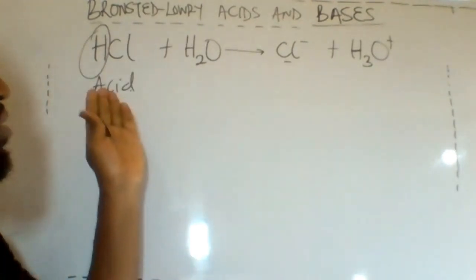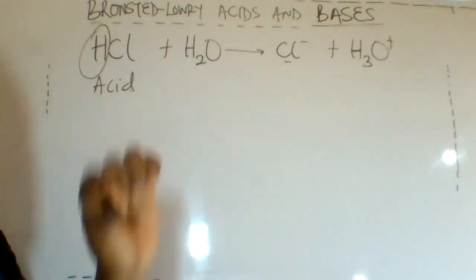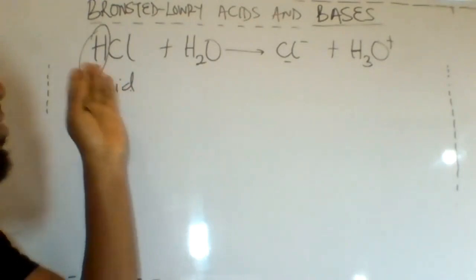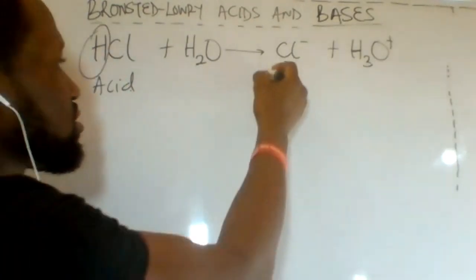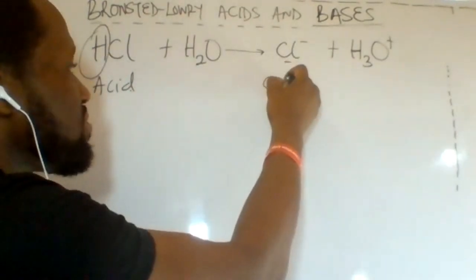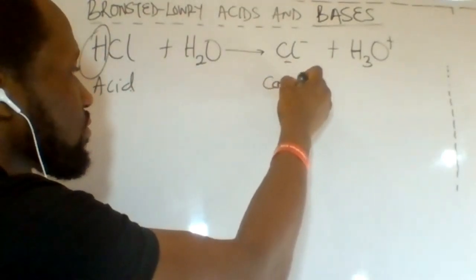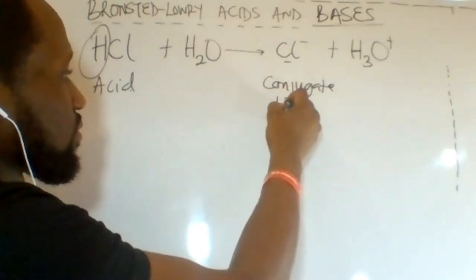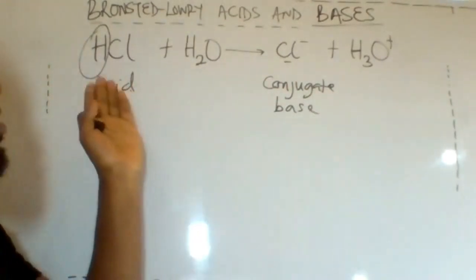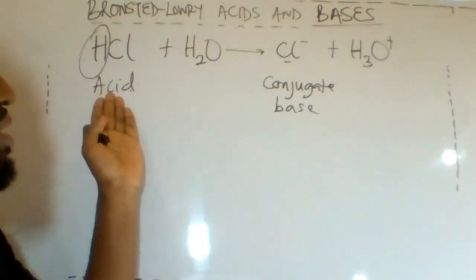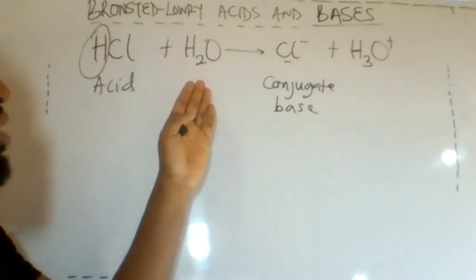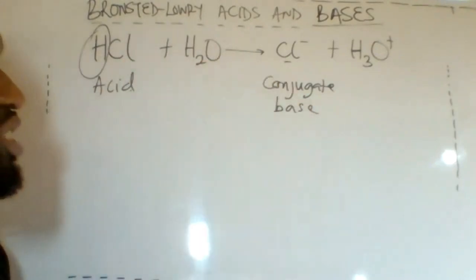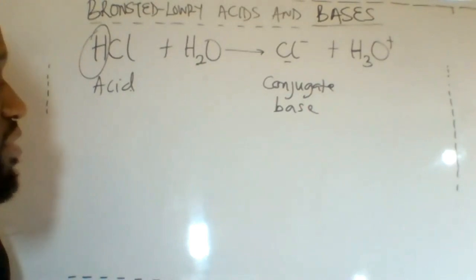The product formed when the Brønsted-Lowry acid donates the proton is called the conjugate base. So the Brønsted-Lowry acid donates a proton to form the conjugate base. This is an example of a Brønsted-Lowry acid.